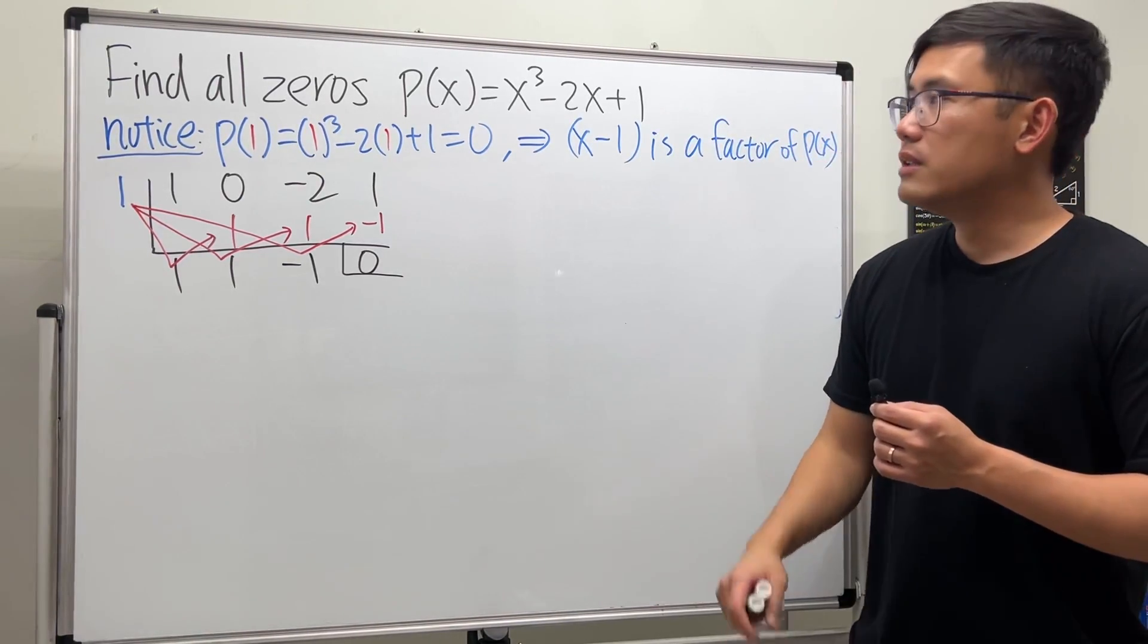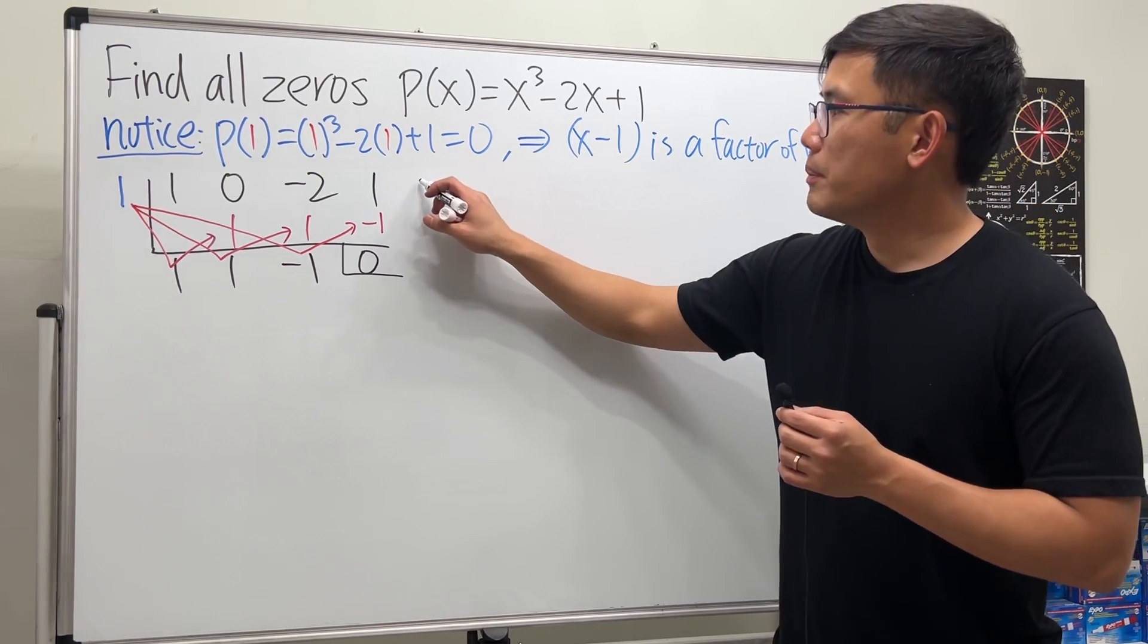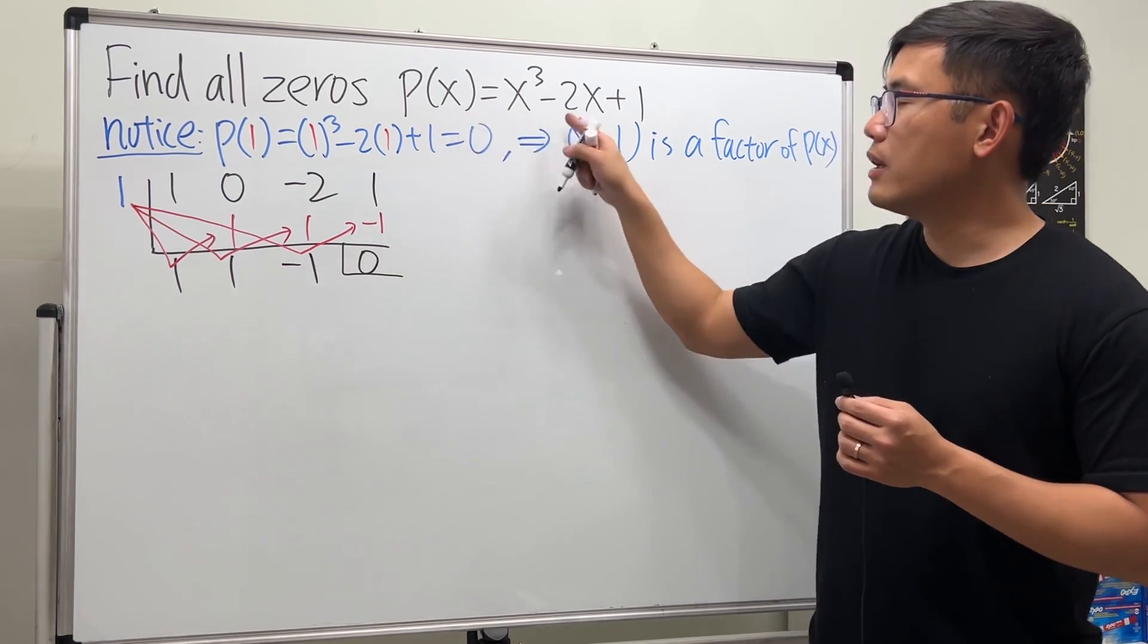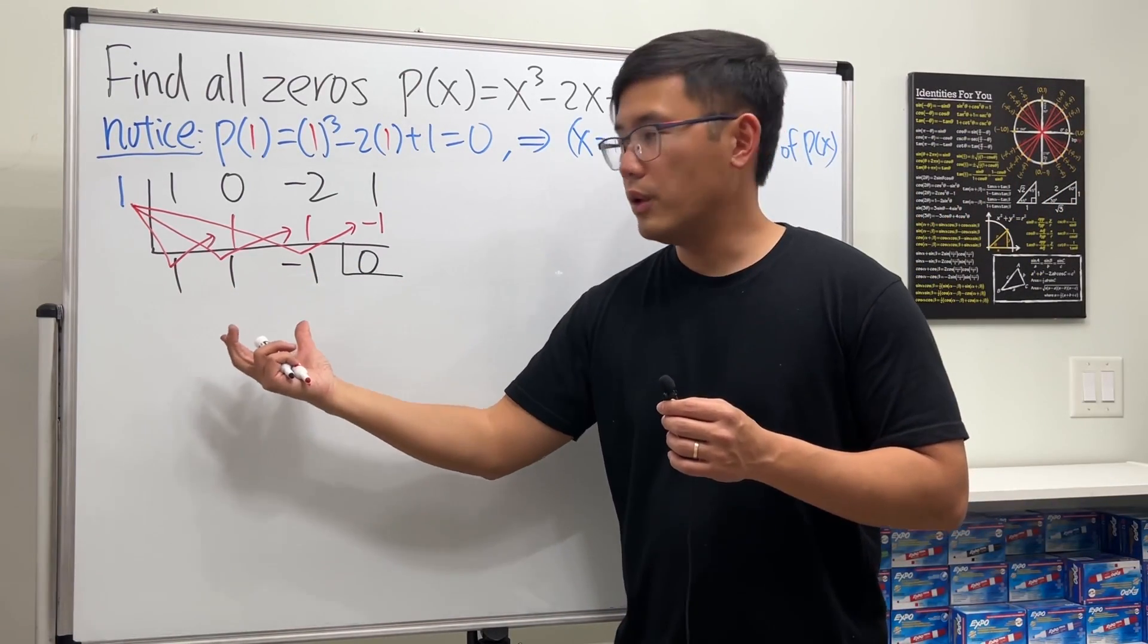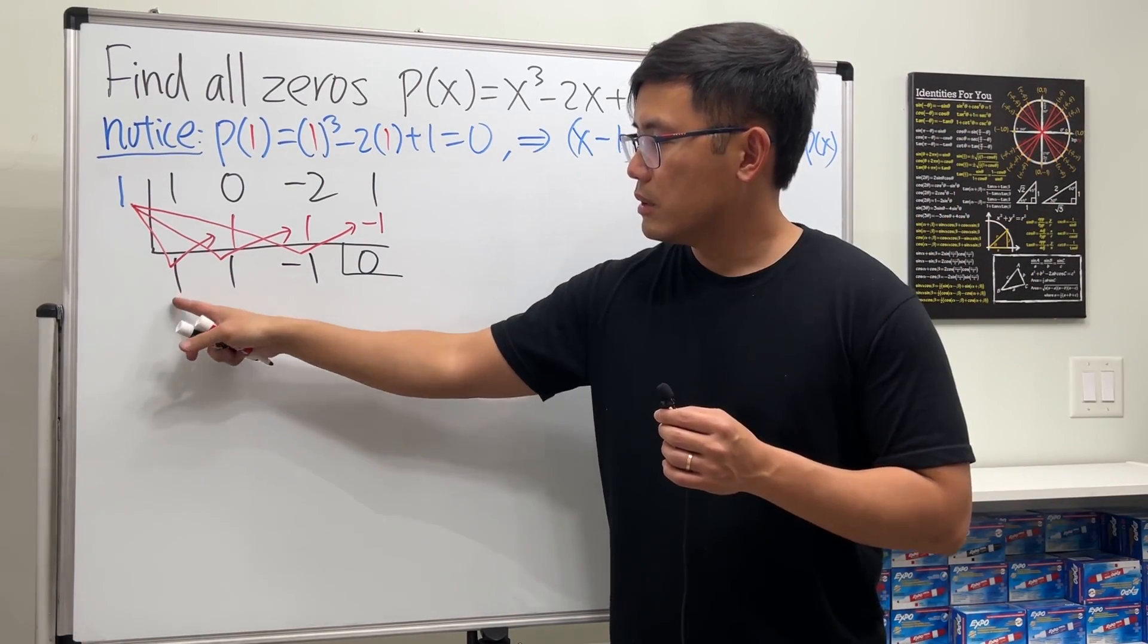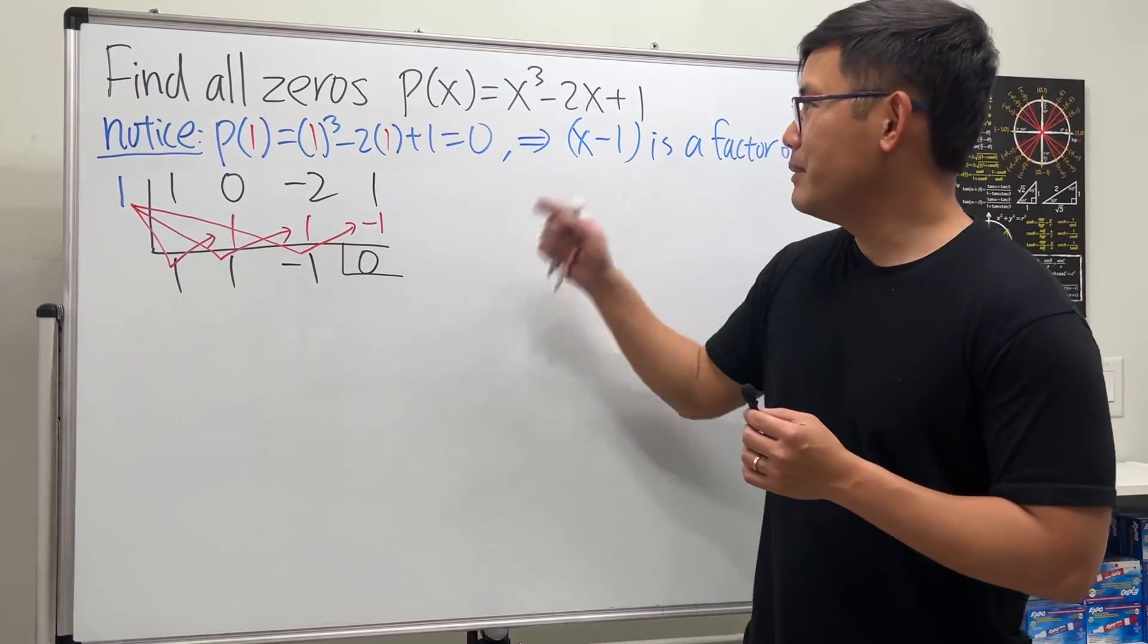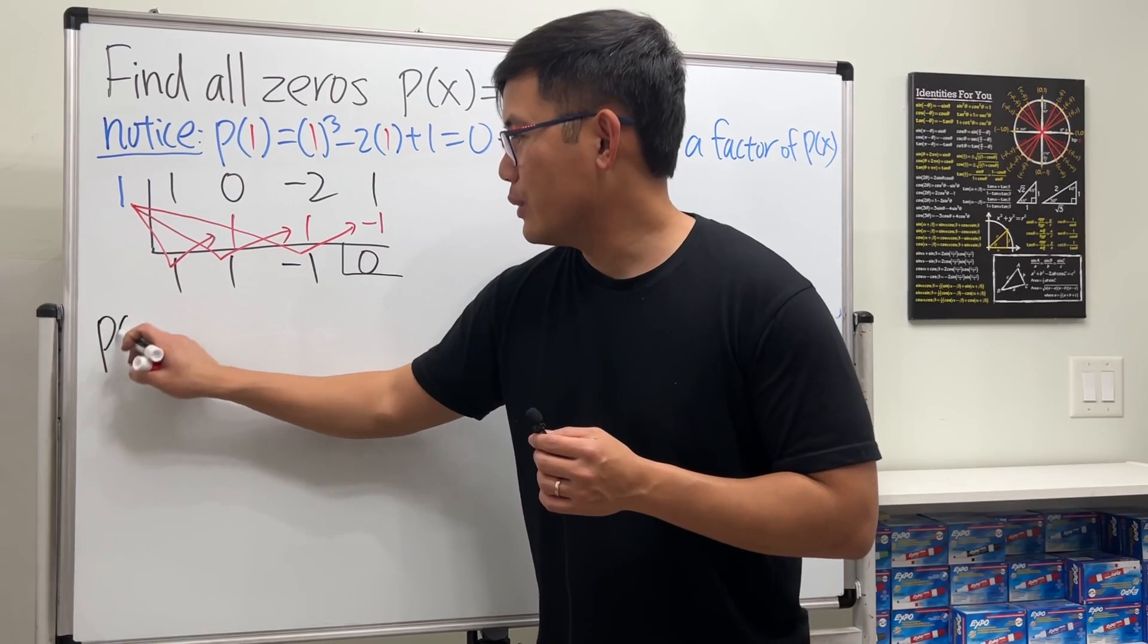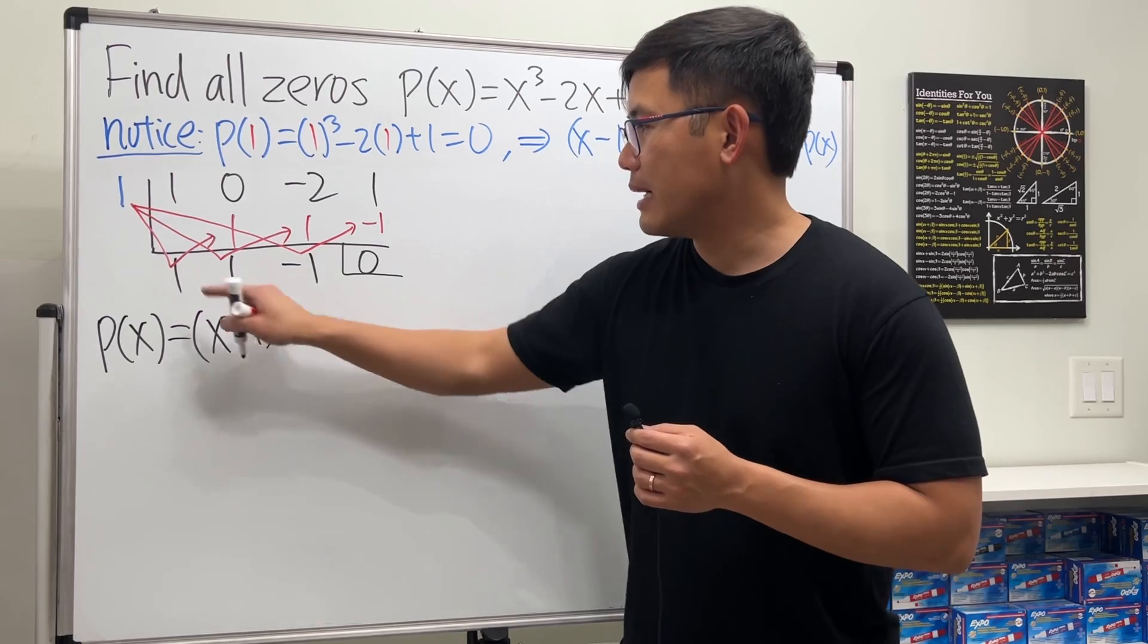This means we know that P(x) right here can be written as this times this. These are the coefficients for the quotient, so let me write it down for you.